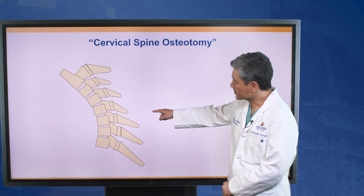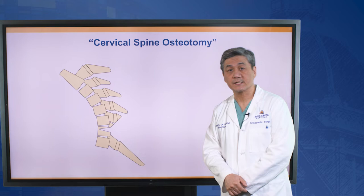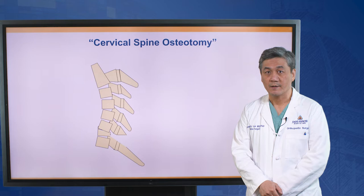This picture explains cervical osteotomy. We go to the back of the spine and cut part of the lamina, pedicle, and vertebral body. It is essentially an artificial fracture to realign the deformed spine.